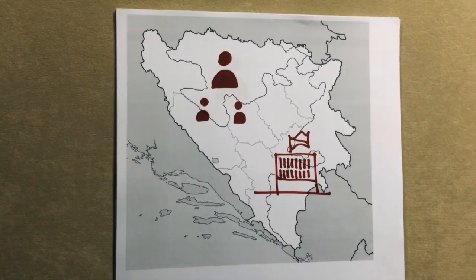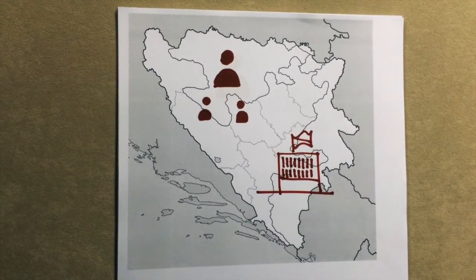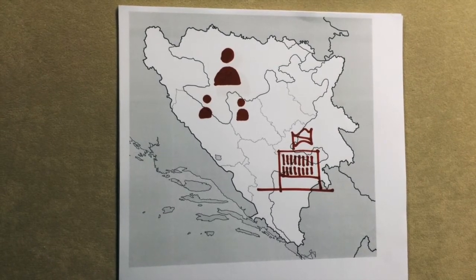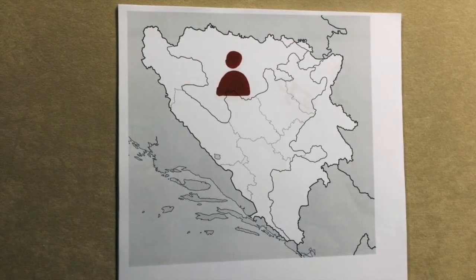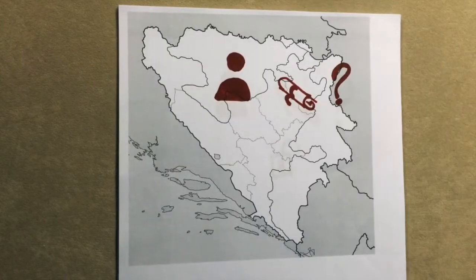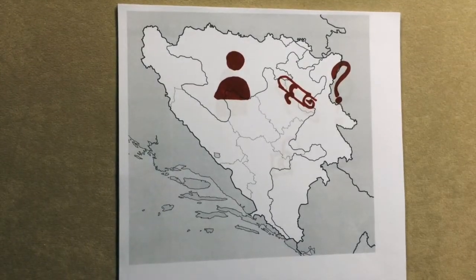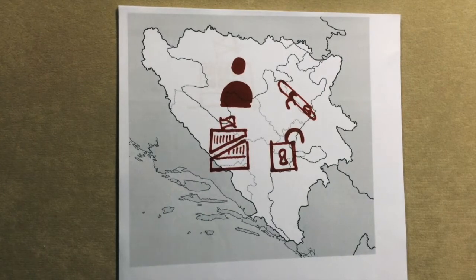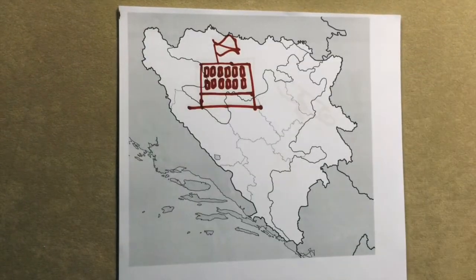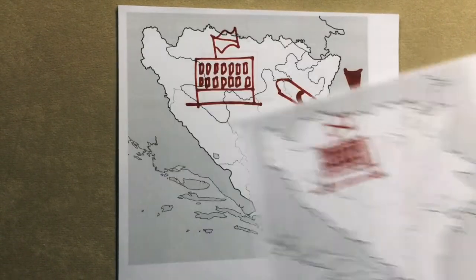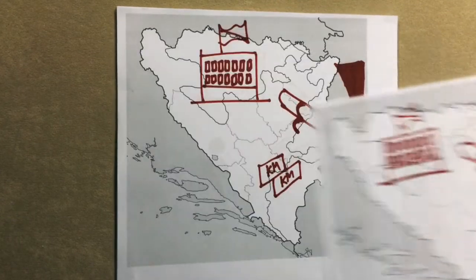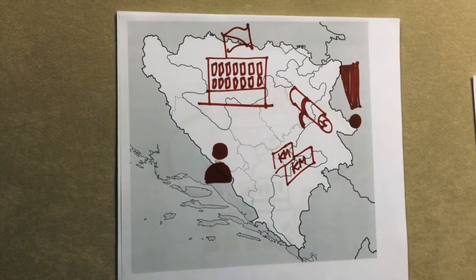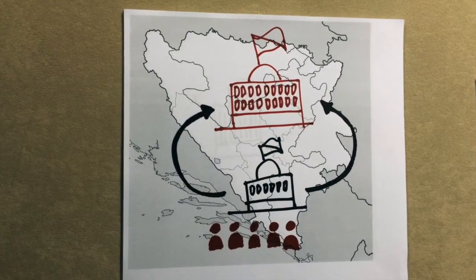If you are a resident of Republika Srpska, you vote for the President, two Vice Presidents, and the Republika Srpska Parliament. The Republika Srpska President can propose laws, grant amnesty to convicted criminals, and dissolve the Parliament. The Republika Srpska Parliament creates laws, manages the budget, and elects governmental officials. It also appoints members to the House of Peoples.